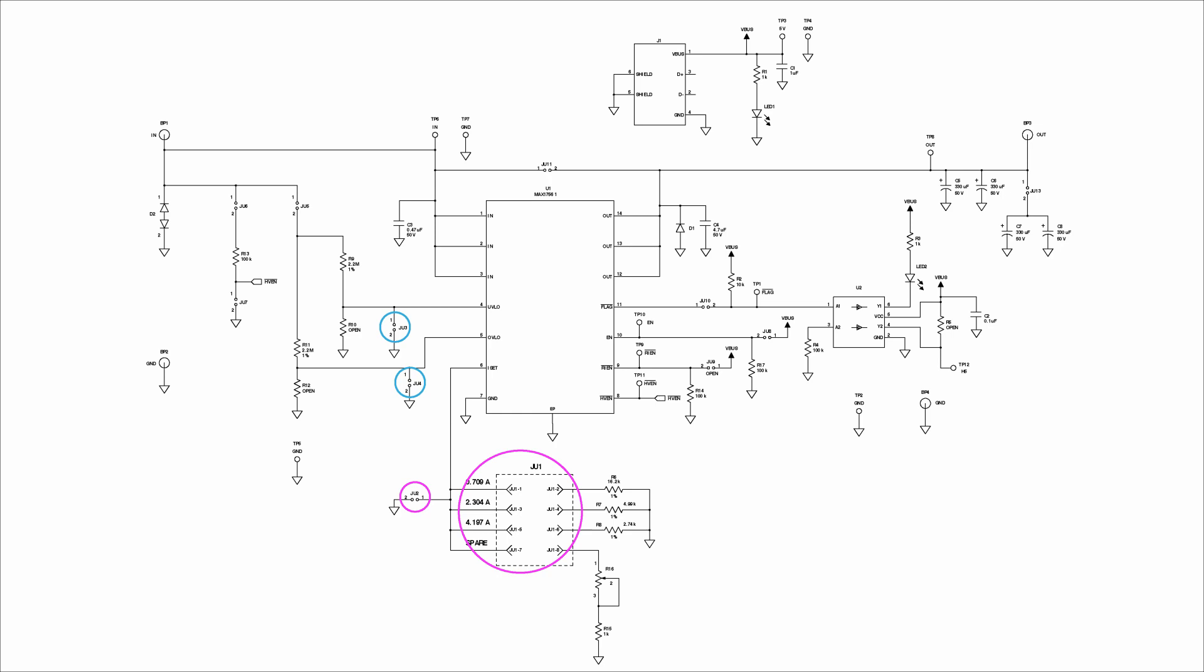Now UV-LO is 19.2 volts and OV-LO is set to 33 volts. Jumper 7 connects active low high voltage enable to ground and jumper 8 connects enable to V-bus, which both allow for normal operation of the device.